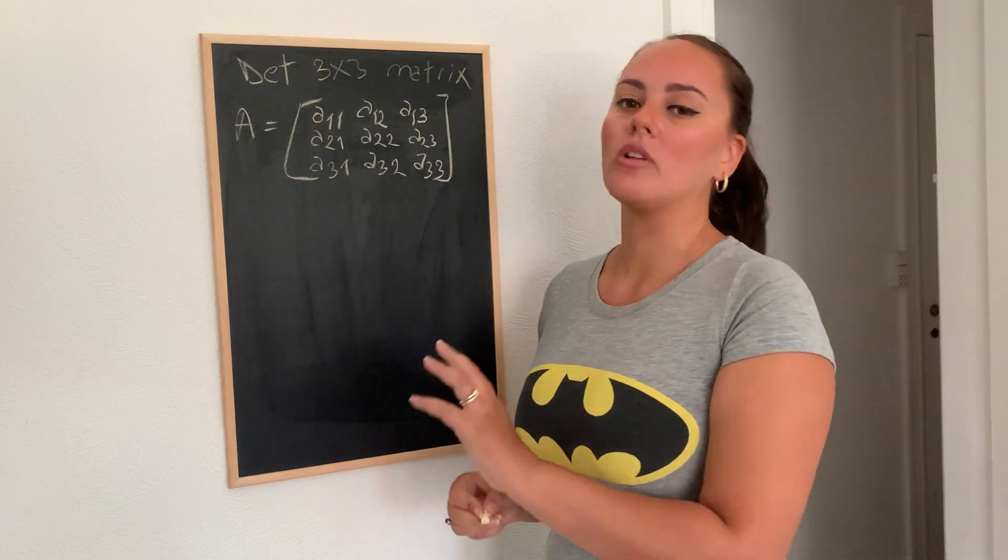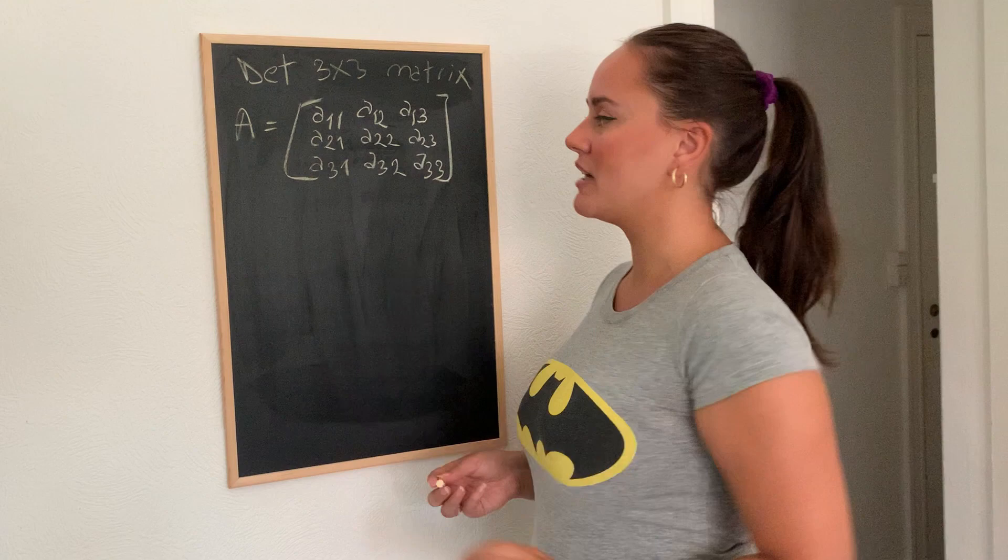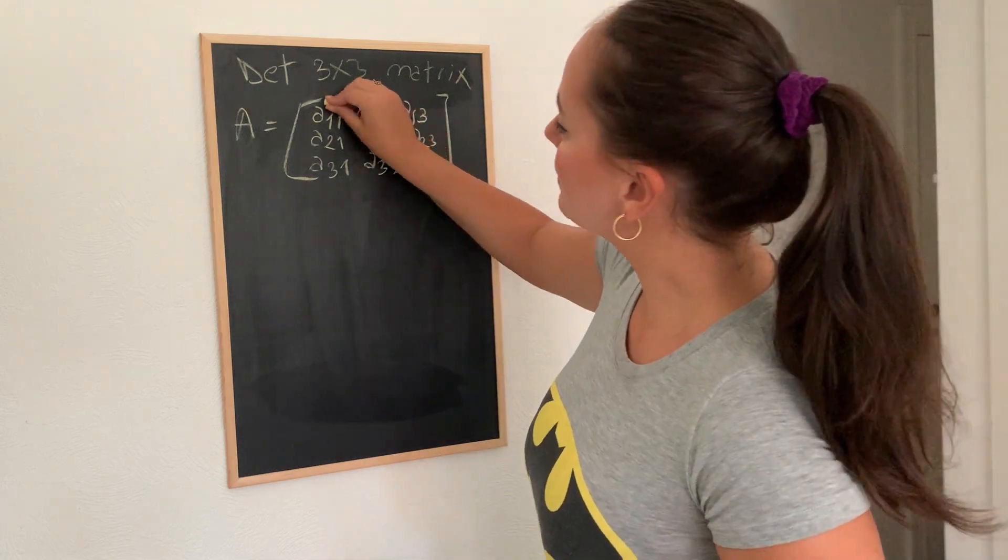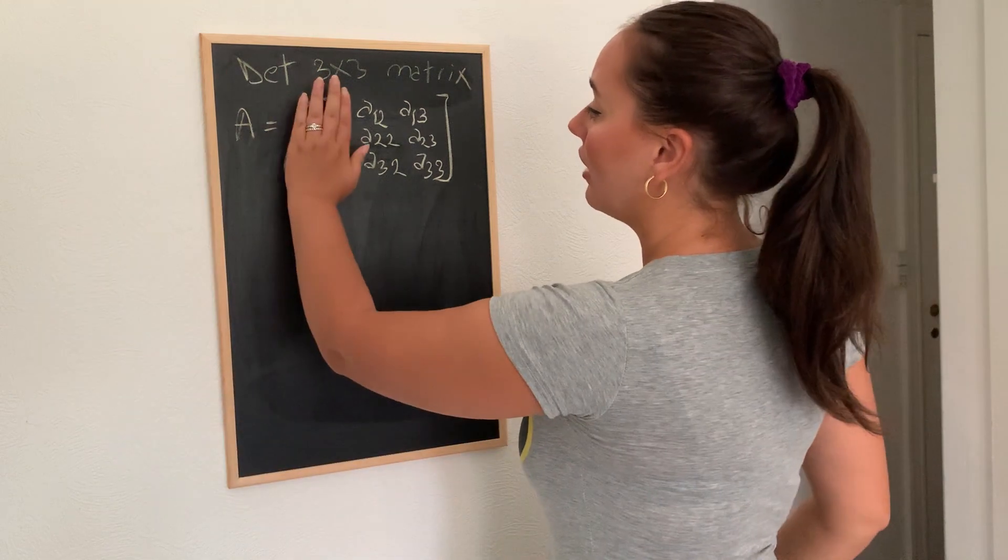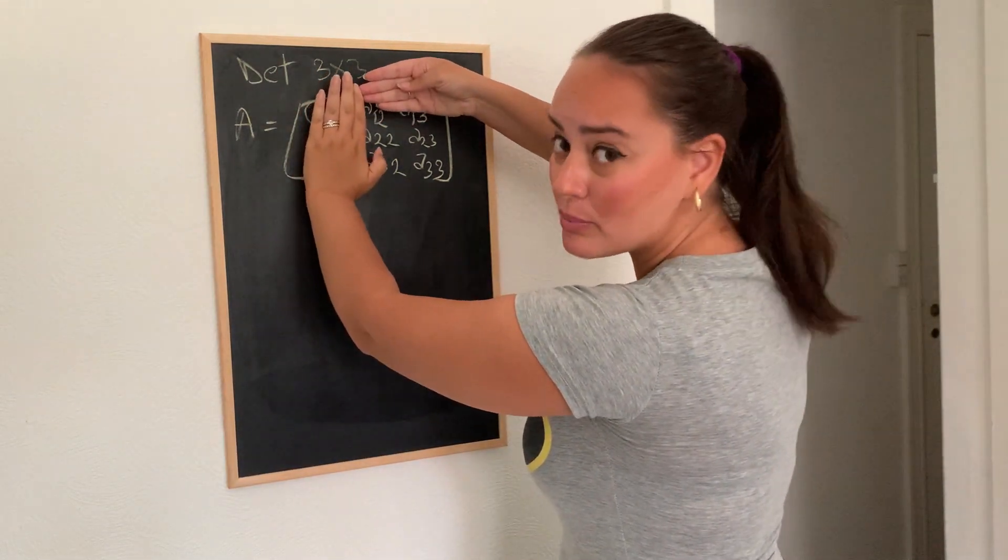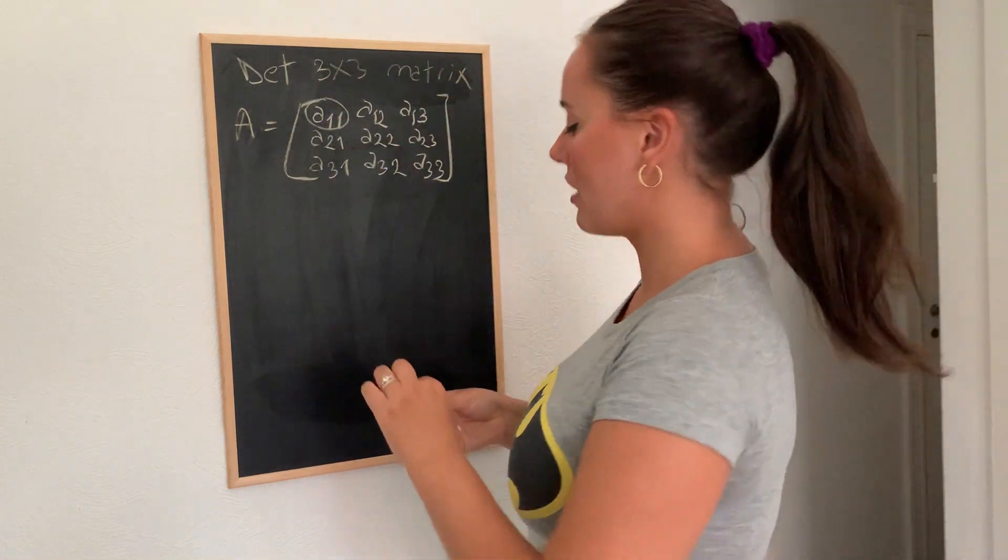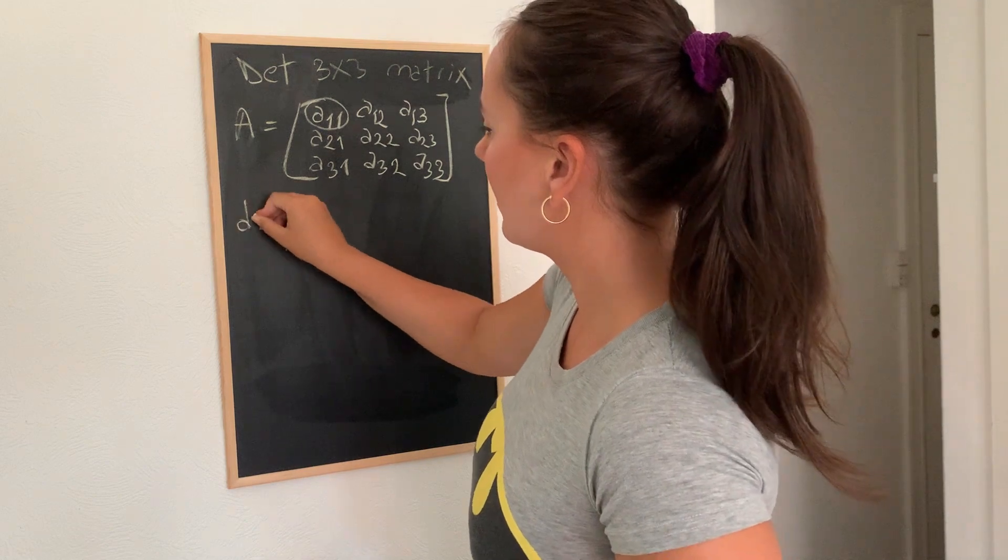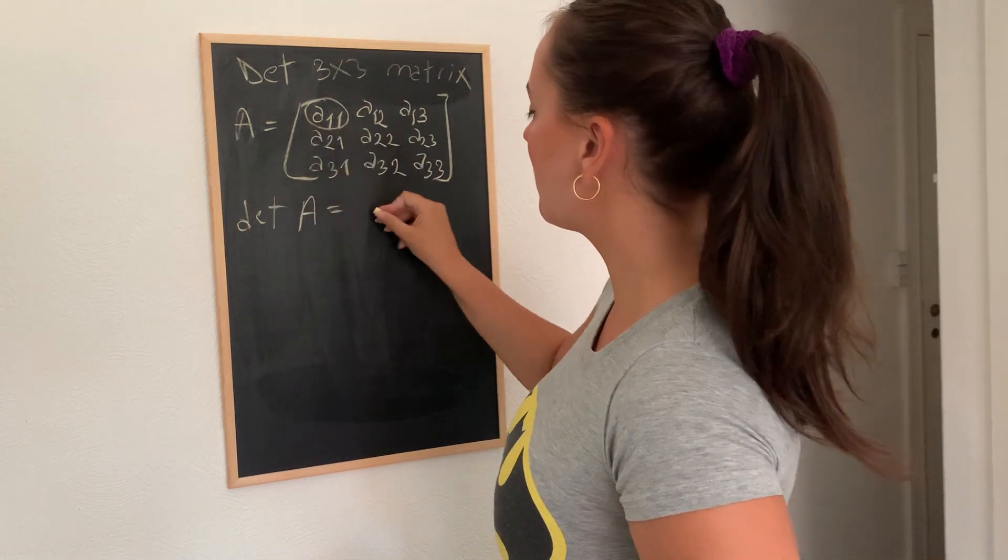The actual formula for calculating the determinant of a 3 by 3 matrix would go like this. First, we need to take the first element here and cover the first column and the first row and multiply this element with the remaining matrix. And I'll show you how you do that. So, the determinant of A would be A1,1.